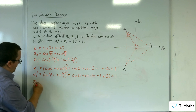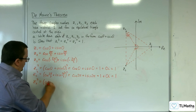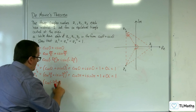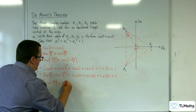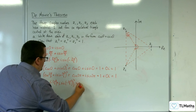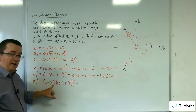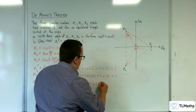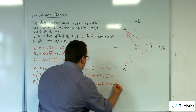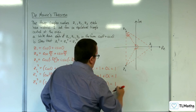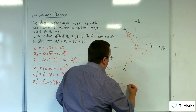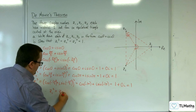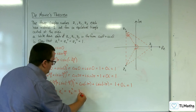And finally, Z3 cubed: cosine of minus 2π/3 plus i sine of minus 2π/3, all cubed. The 3 multiplies with the minus 2π/3, giving cosine of minus 2π plus i sine of minus 2π. Cosine of minus 2π is 1 and sine of minus 2π is 0. And so, therefore, Z1 cubed equals Z2 cubed equals Z3 cubed equals 1.